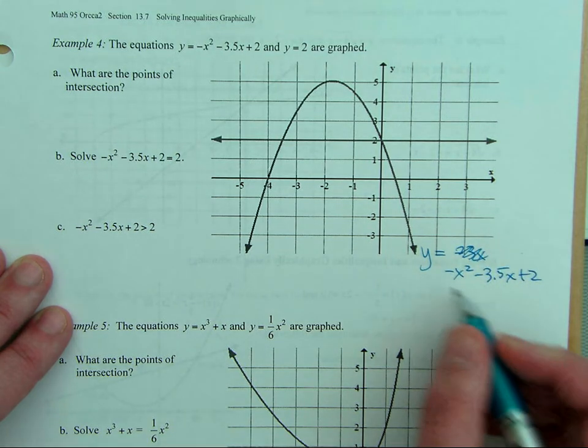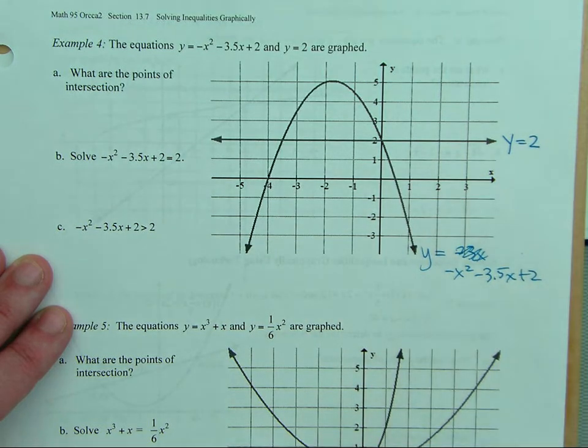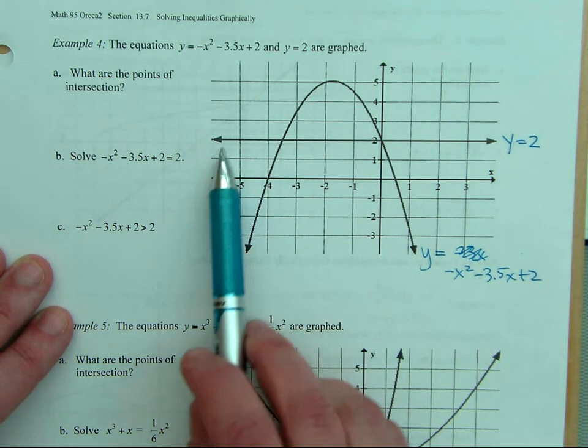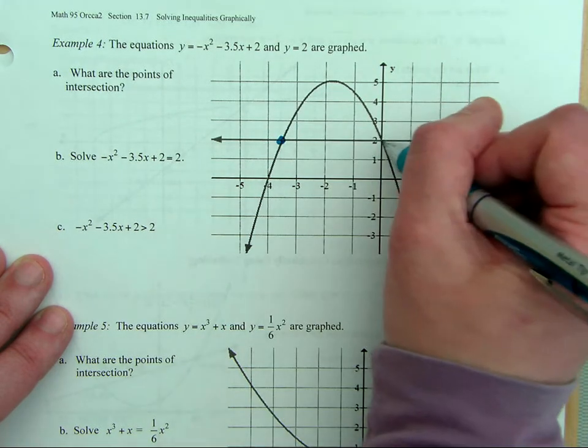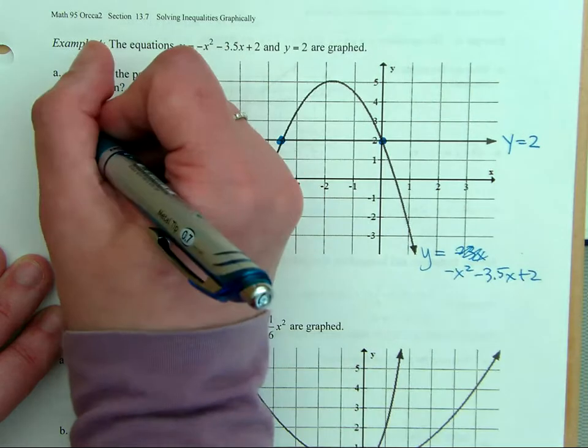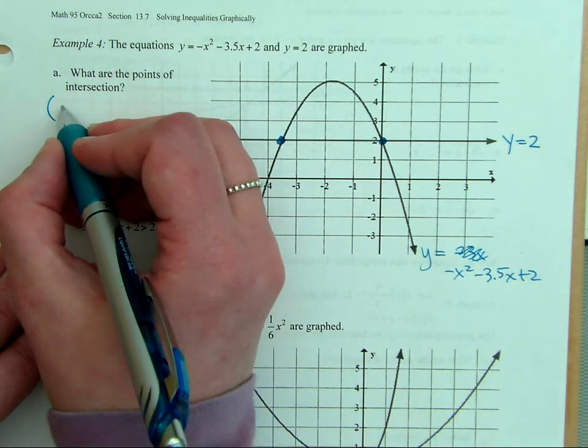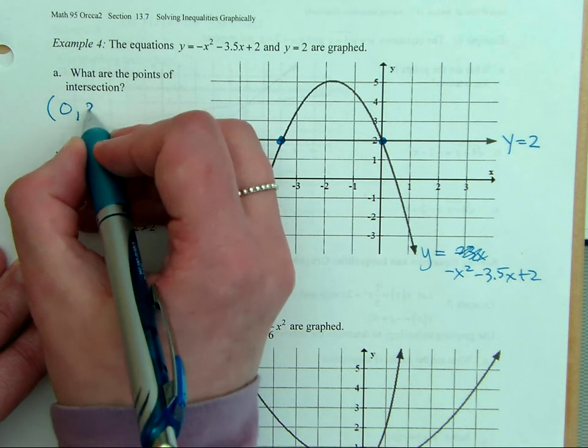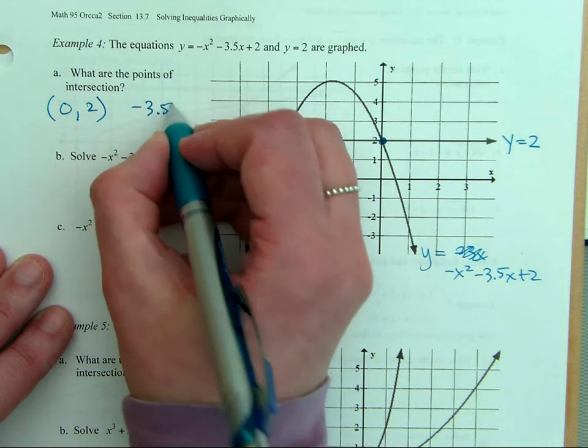This one is y equals negative x squared minus 3.5x plus 2. If you plug that into Desmos, you would get that graph. And then y equals 2. Y equals a number is always going to be a horizontal line. So we're looking just first for the points of intersection. So the points of intersection are 0, 2 and negative 3.5, 2.